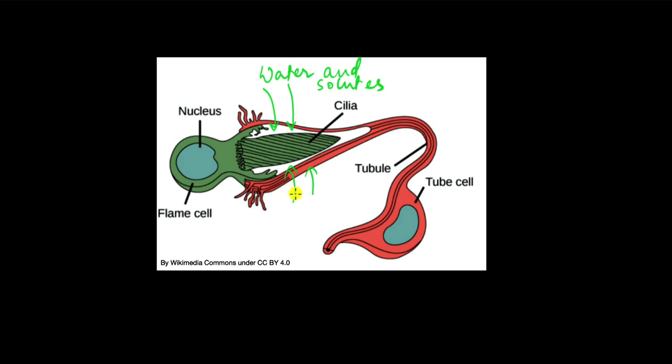But for now just know that the flame cells are responsible for osmoregulation. Osmoregulation means regulation of the osmotic pressure which depends on the concentration of solutes in water. Basically it means regulating the salt-water balance. So if there is too much water they excrete it. If there is too much salt they don't excrete that much water. So they maintain a balance.